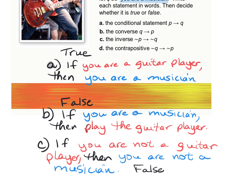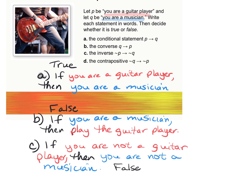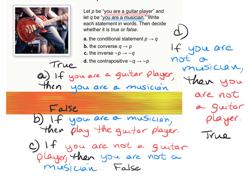The last one is the contrapositive. Remember, that's the most work — we need to flip and negate. So for the contrapositive, we're going to take the converse and negate it: if you are not a musician, then you are not a guitar player. And this one is true — a person who's not a musician cannot be a guitar player.